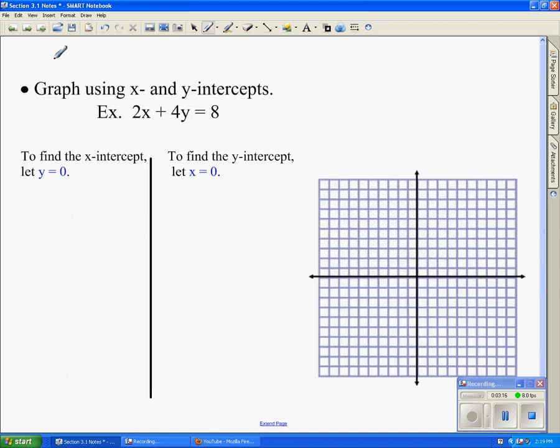The next problem asks us to graph using x and y-intercepts. They specifically want us to use this format to graph the x and y-intercepts, and every time they ask us to use the x and y-intercepts, we're going to use this method. To find the x-intercept, we're going to let y equal 0 and solve. To find the y-intercept, we're going to let x equal 0 and solve.